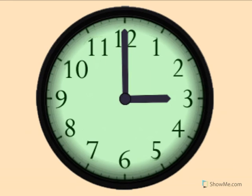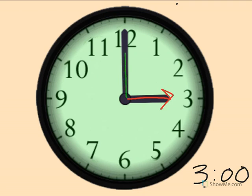3 o'clock. Show me 3 o'clock on your clock. The little hand tells the hour. The little hand points to the 3. The big hand tells the minute. Big hand pointing straight up is o'clock.